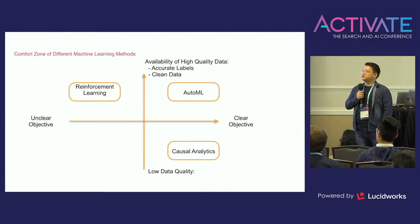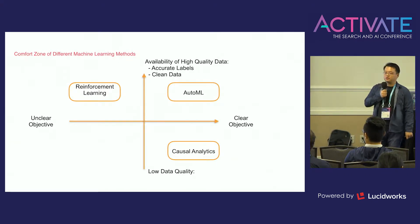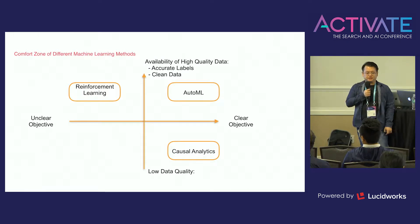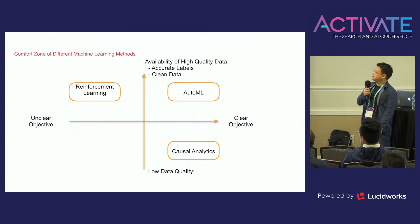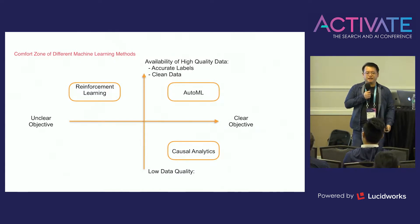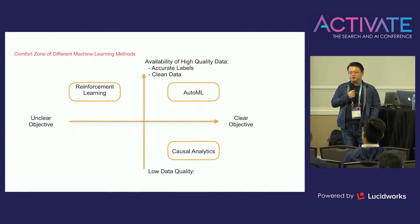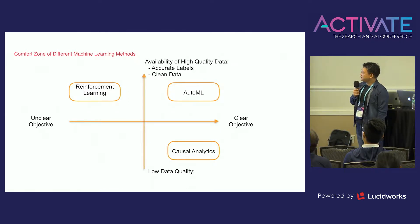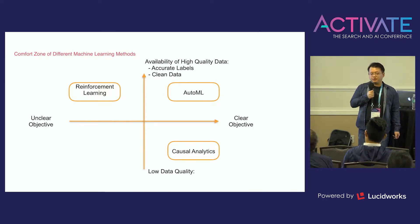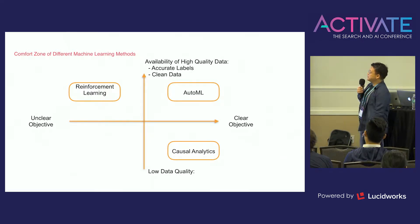Before we introduce the problem, here is the comfort zone of different machine learning methods. The x-axis is whether you have a clear objective for your problem — what to optimize. The y-axis is data quality: do you have reliable, non-noisy training data, a lot of labels, and are your labels trustworthy? When the objective is clear, like classifying cats and dogs from pictures, and you have a lot of reliable training data like ImageNet, then the problem is in the comfort zone for automated machine learning.